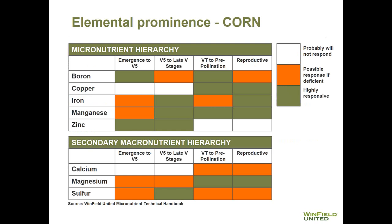This is an example of elemental prominence for corn taken out of Winfield United's Micronutrient Technical Handbook, looking at five micronutrients — boron, copper, iron, manganese, and zinc — and three secondary macronutrients — calcium, magnesium, and sulfur. In these tables, a white square indicates that at that growth stage, corn will probably not respond to that given nutrient. An orange square indicates a possible response if deficient. And a green square indicates that the crop is highly responsive to that nutrient at that growth stage.